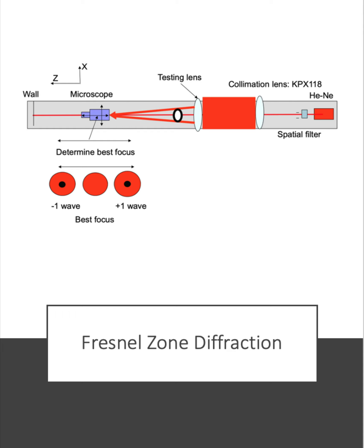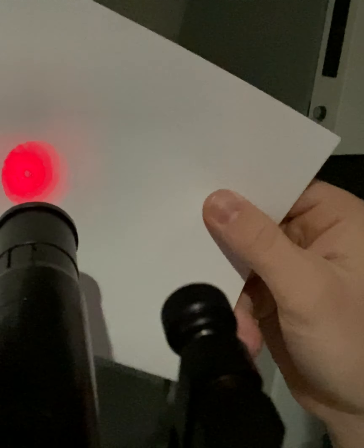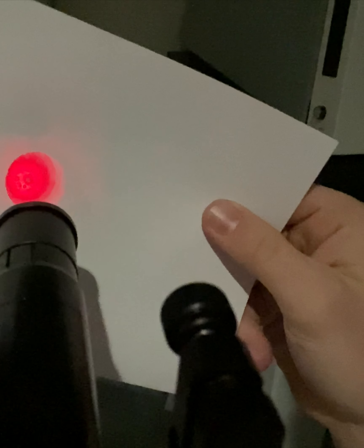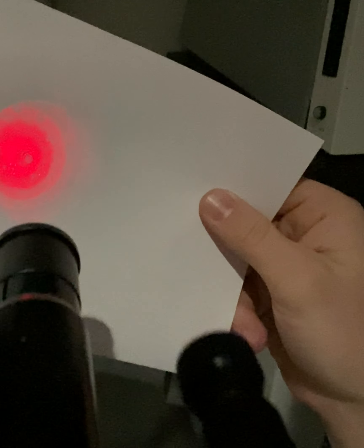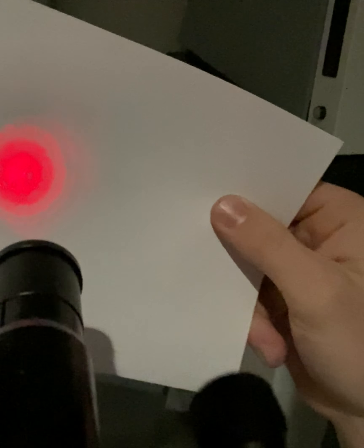The best focus of the system was found using Fresnel's diffraction theory. This theory postulates that the best focus is sandwiched between two dark spots caused by diffraction on either end of the best focus. We found those two dark spots using a microscope and then were able to infer that the best focus was right in the center of those two dark spots.